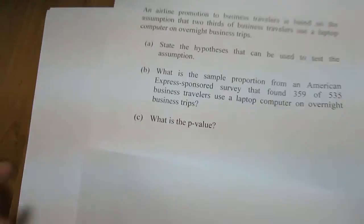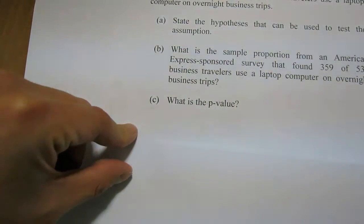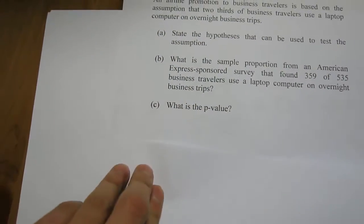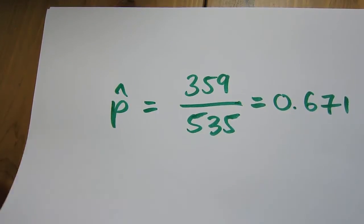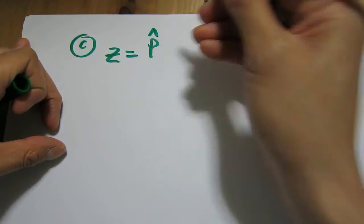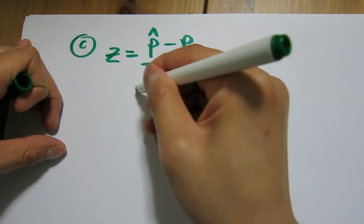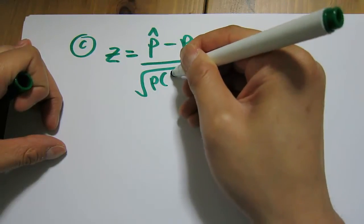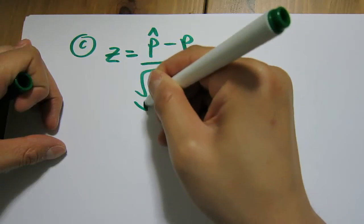Let's look at Part C: what is the p-value? This is the hardest section of the question. The first thing we need to do when calculating the p-value is calculate the Z-score. With a test of proportions, we always use the Z-tables or Z-statistic — we never use the student T-distribution. With a proportion, we always assume we have the population standard deviation. So for Part C, Z equals our sample proportion minus our assumed population proportion, divided by the standard error, which is the square root of P times (1 minus P) divided by N.